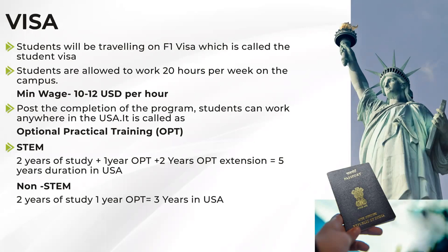If an internship is part of your program — called Curricular Practical Training (CPT) — you can work outside the campus at the company offering you the internship. The duration of CPT cannot exceed more than one year. Most universities give an internship option for a maximum of six months, with a minimum of one to two months. Most students who excel in internships later have it converted to a full-time job. The internship typically takes place in your final semester.